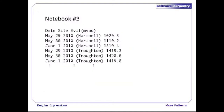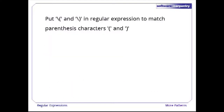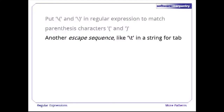Let's take a look at notebook number three. It has the date as three fields, the site name in parentheses, and then the reading. But how do we match against those literal parentheses? In regular expressions, parentheses create groups rather than matching characters. The way to match a literal open or closed parenthesis is to put backslash-open-parenthesis or backslash-closed-parenthesis in the regex. This is another escape sequence, just as backslash-t represents a tab.